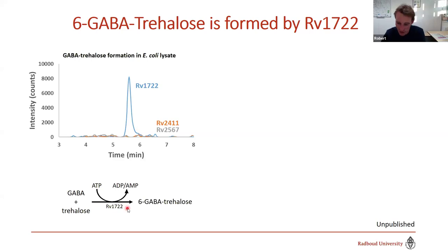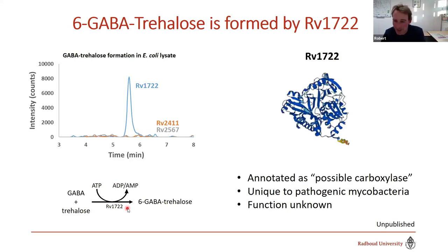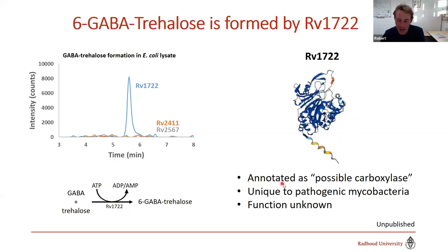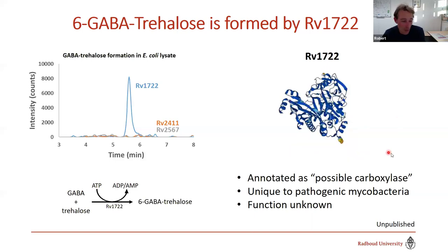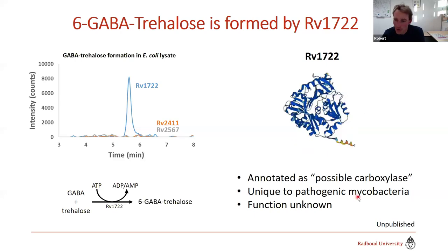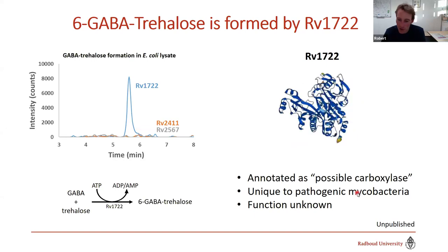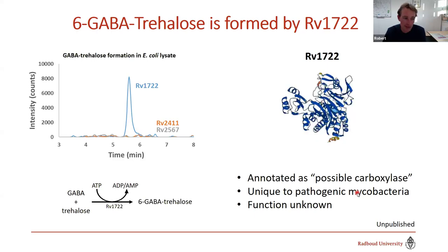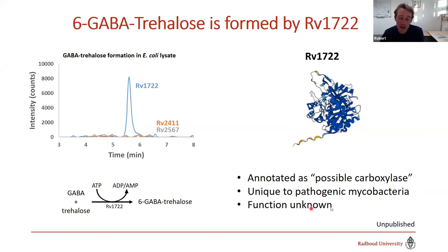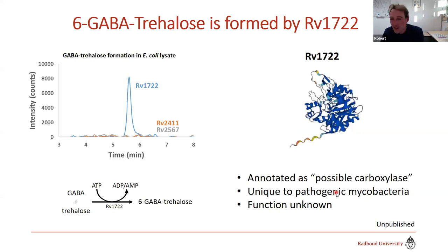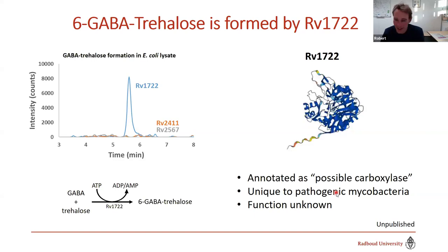Expressing the three candidates in E. coli showed that only rv1722 caused the E. coli lysate to make this metabolite — rv1722 is the GABA-trehalose synthetase. We hoped this would reveal function through existing genetic screens, but no conditions showed it to be essential. The enzyme is annotated only as a possible carboxylase and seems non-essential under most tested conditions, though it's unique to pathogenic mycobacteria and absent from non-pathogenic smegmatis, suggesting it's related to adaptation to life in our lungs.